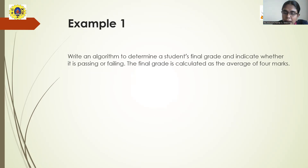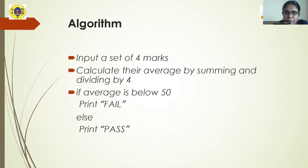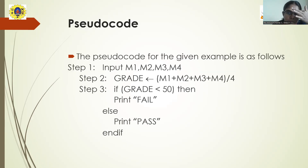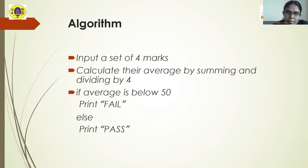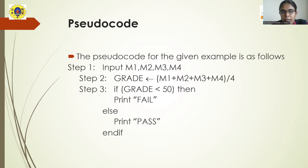The student's grade is determined by calculating the average of the four marks. Based on the average, if the average is greater than 50, the student is considered to have passed. And if the average is less than 50, the student is considered to have failed in the particular semester or academic year. This is the algorithm for that particular problem.